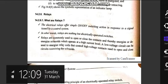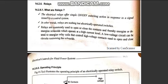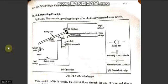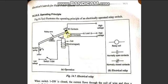For the operating principle, we have a tension spring, an arm, a break contact, a normally open contact, and an electromagnetic coil. When you switch on a low voltage, it energizes the coil, which becomes electromagnetic. When the electromagnet is actuated, it automatically pulls the relay arm, causing it to attract and connect the circuit.